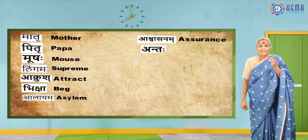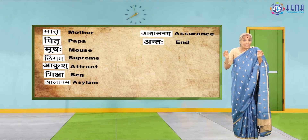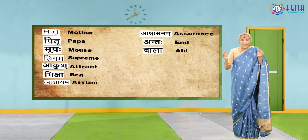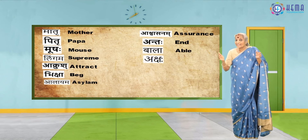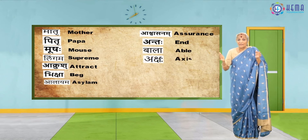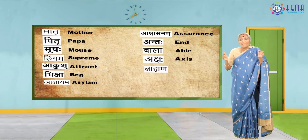Anta in Sanskrit gives us 'end' in English. Bala gives us 'able.' Aksha gives us 'access.' Brahmam relates to 'Abraham.'